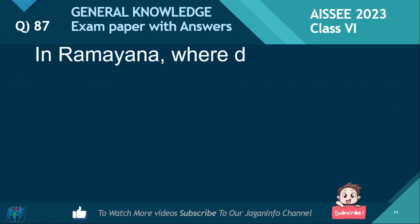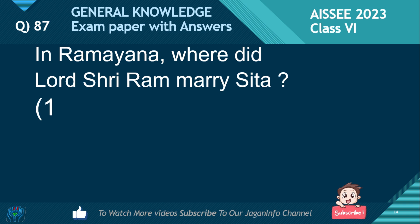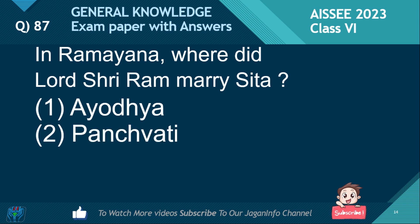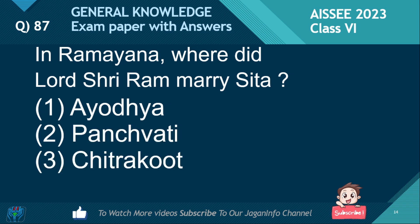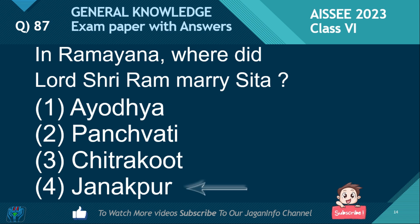In Ramayana, where did Lord Sri Rama marry Sita? Options: Ayodhya, Panchavati, Chitrakoot, Janakpur. If you know the answer, please pause the video and put the comments. The right answer is Janakpur.